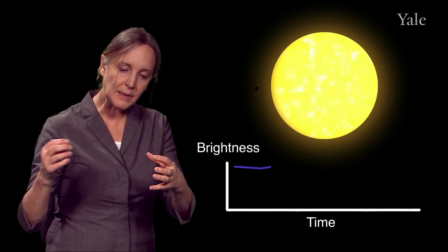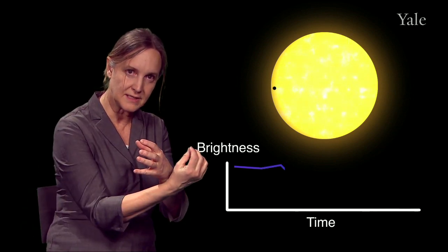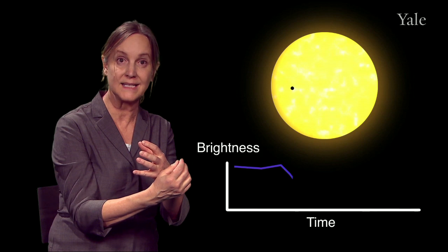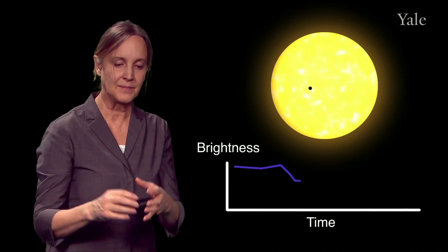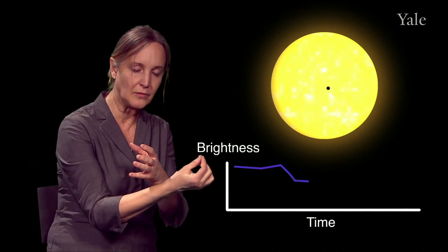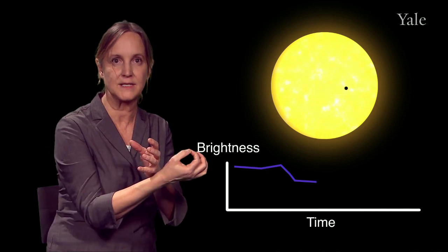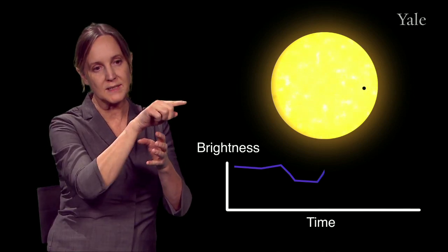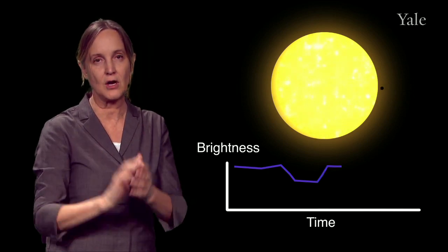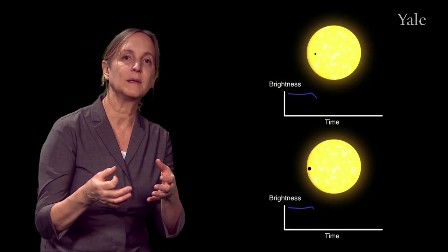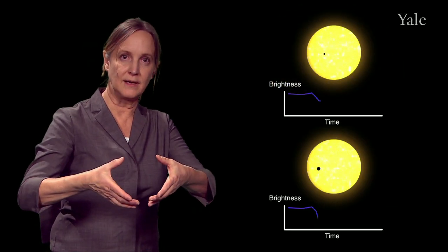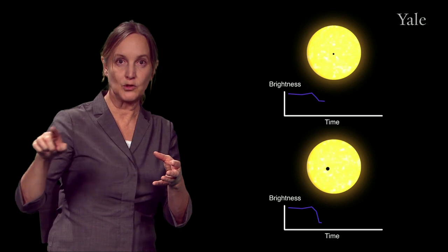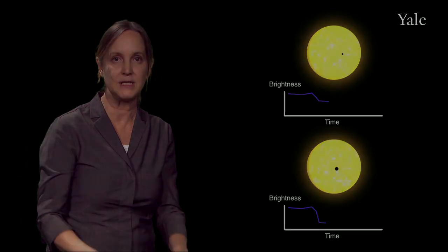Another technique is called the transit method. With this method, the planet passes in front of the host star and causes the starlight to dim ever so slightly. It takes about three hours for a planet to go across the face of its star, and so for three hours we'll see a little dip in the brightness of the star. You can imagine that if the planet is very large, the depth of that transit will be much deeper.